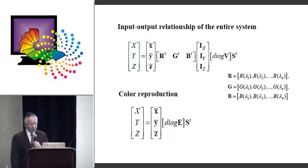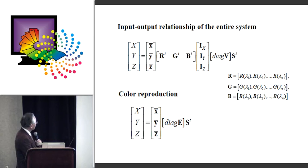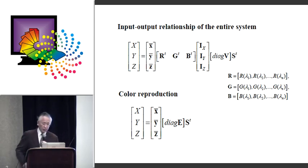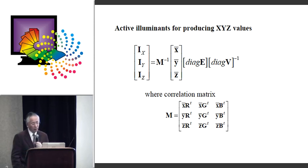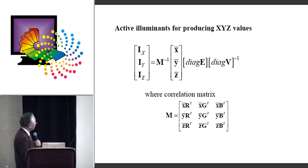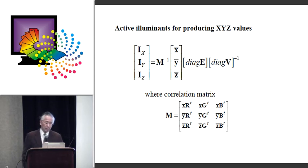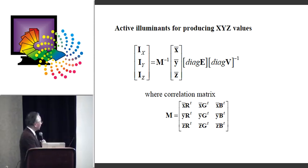The tristimulus value system is described in vector form. Comparing the equations, each equation should be equivalent to each other. We can derive an important relation: the solution equation for producing X, Y, Z values of color appearance under the target illuminant E. Importantly, this equation does not depend on the object surface, but depends only on the camera sensitivity and spectral distribution of the system.